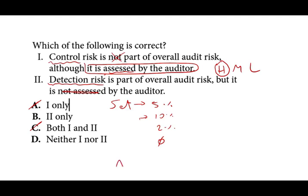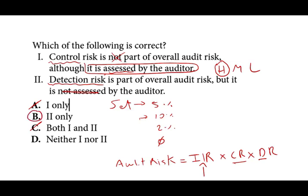The audit risk formula is: inherent risk times control risk times detection risk. We talked about detection risk and control risk; inherent risk is the third component we'll discuss. When you multiply all three together, you get the overall audit risk. So the answer to this question is B — statement two only is correct, because detection risk is part of audit risk but is set, not assessed, by the auditor.